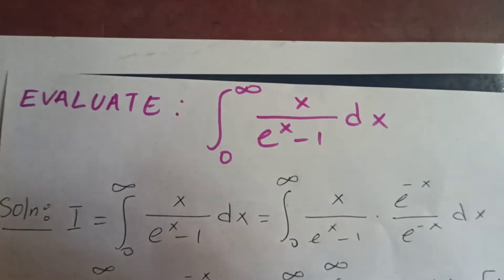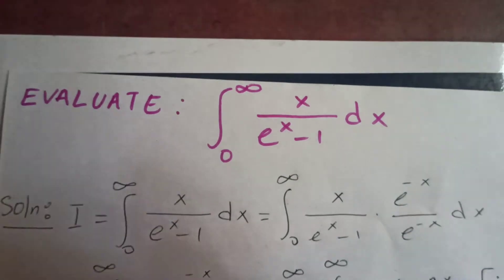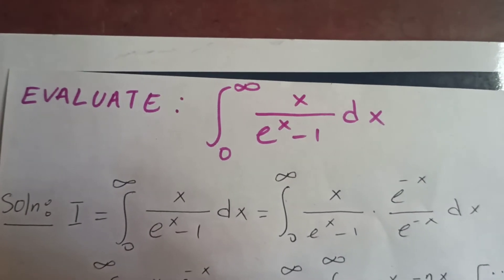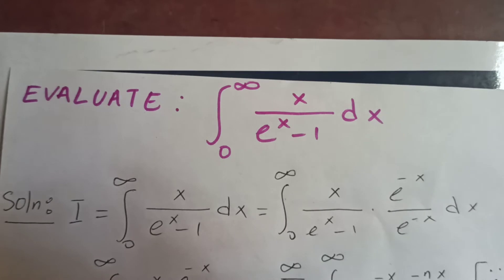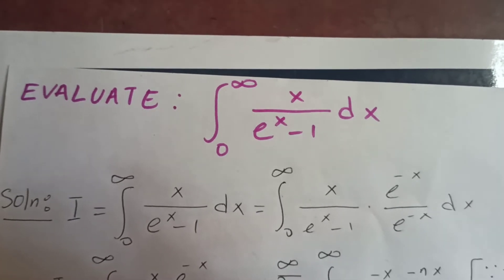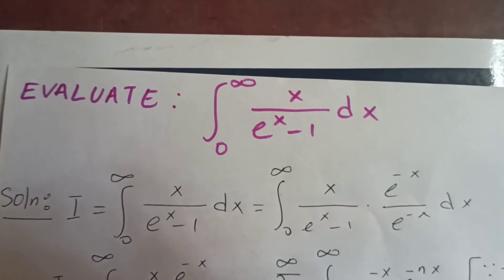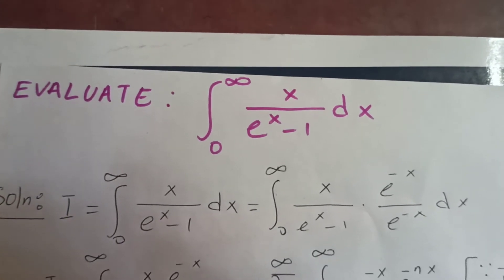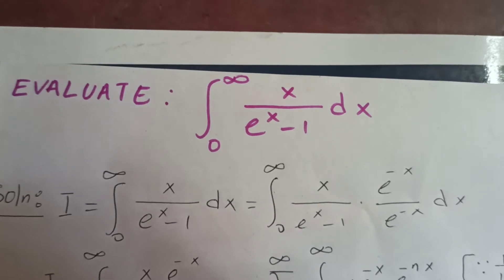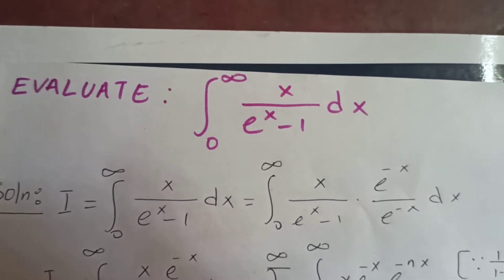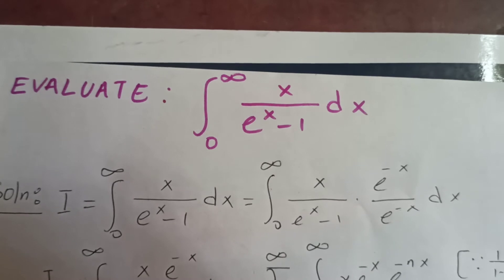Let our integral be I, which is the integral from 0 to infinity of x over (eˣ minus 1) dx. Now this is equal to — let's multiply both numerator and denominator by e to the negative x.